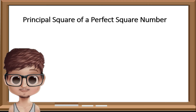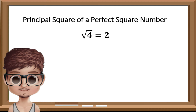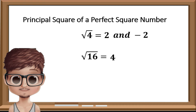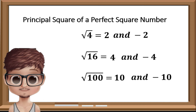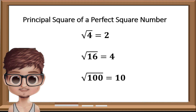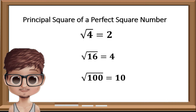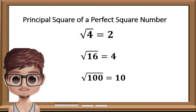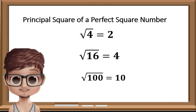For the principal square root of a perfect square number, we have already known that the square root of 4 is positive 2 and negative 2, the square root of 16 is positive 4 and negative 4, and the square root of 100 is positive 10 and negative 10. If we will find the principal square root of a number, we will just omit the negative number. So the principal square root of 4 is 2, of 16 is 4, and of 100 is 10.